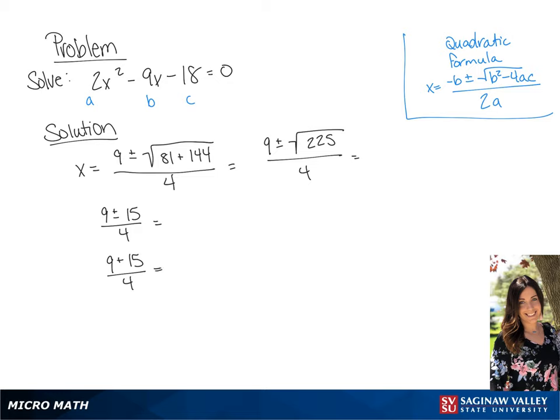9 plus 15 over 4 is going to give us an answer of 6, or 9 minus 15 over 4 is going to give us an answer of negative 3 over 2.